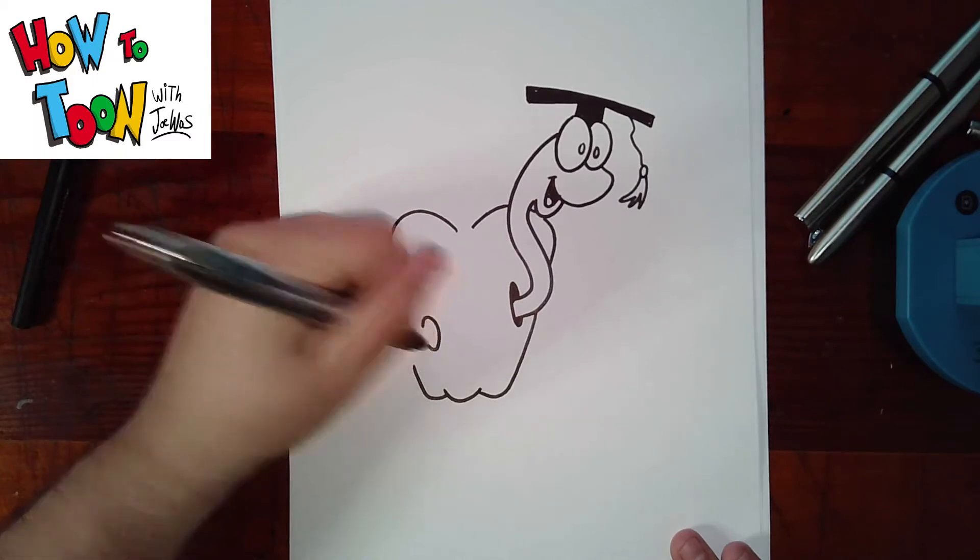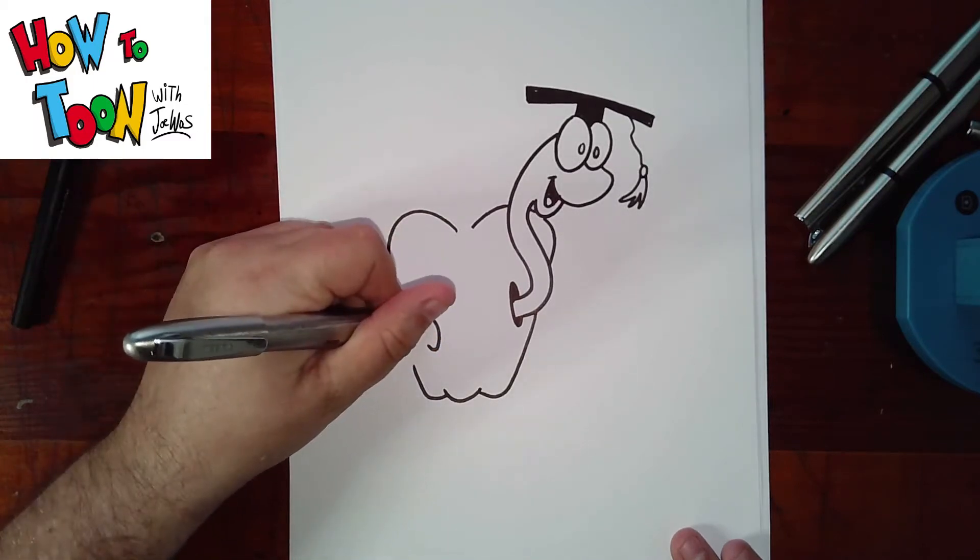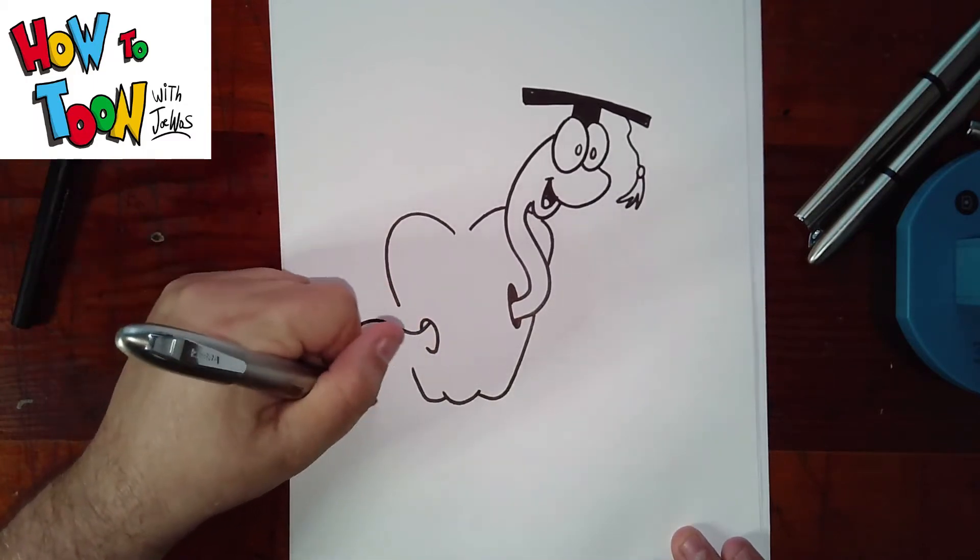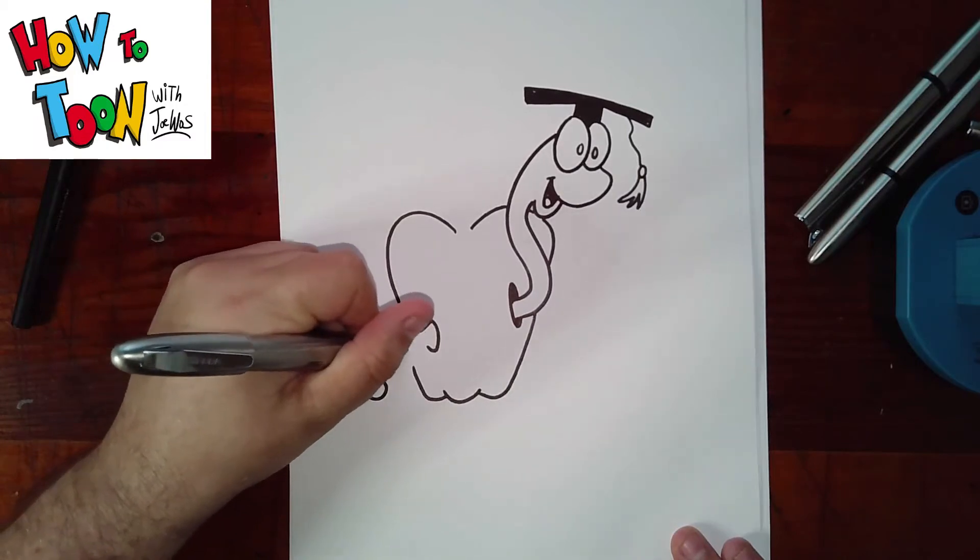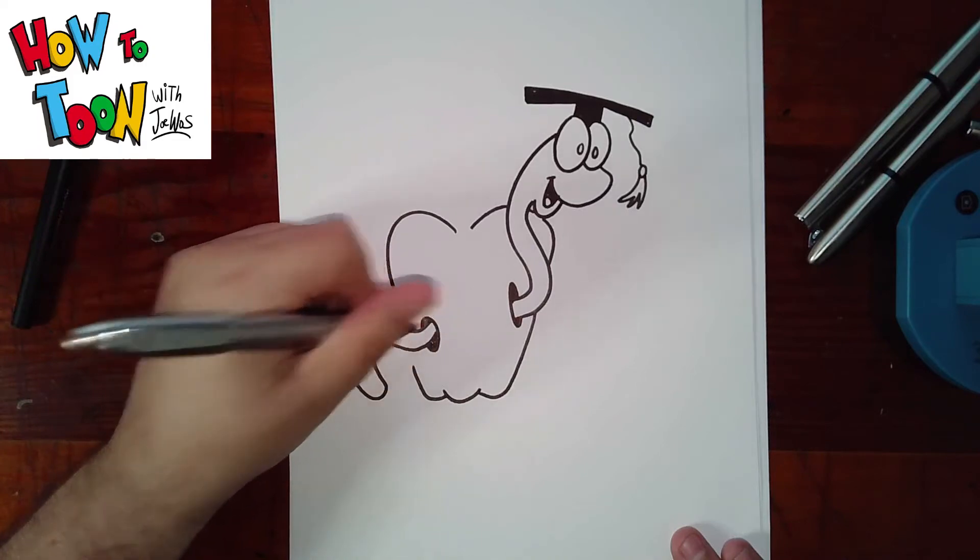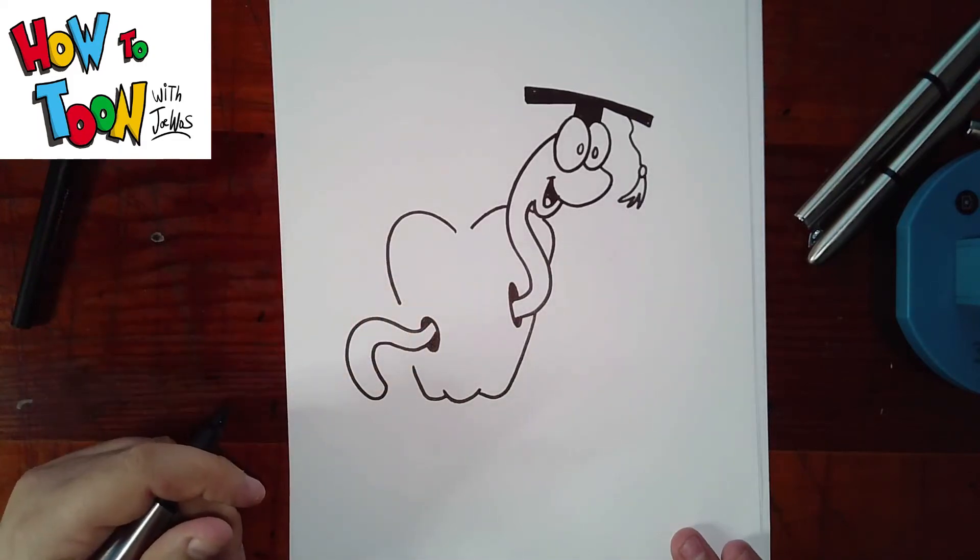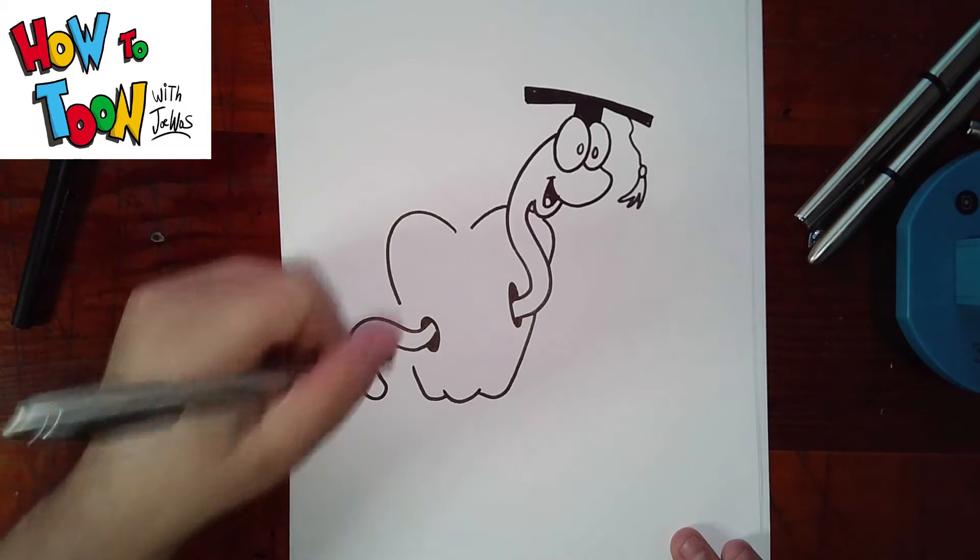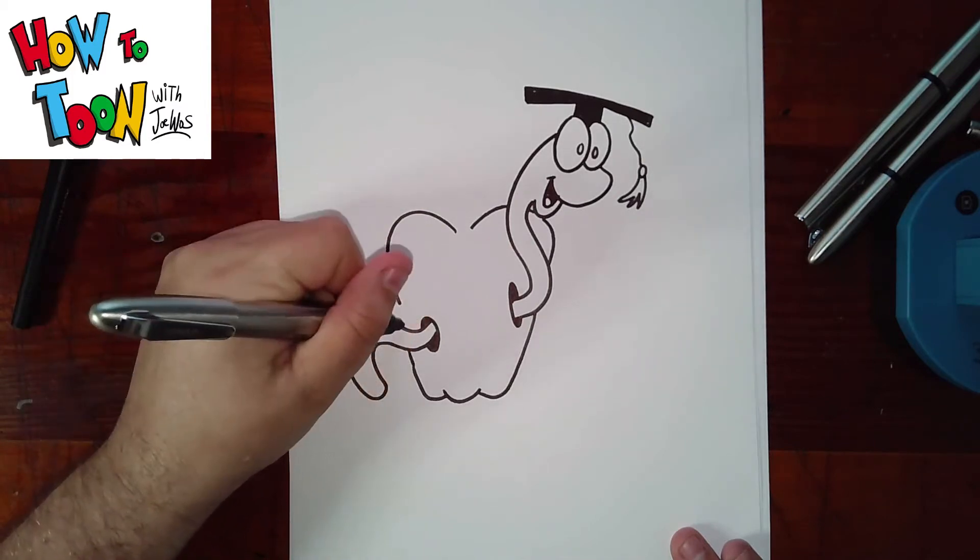So backwards C, and then here's the other part of that worm sticking out. And then I shade in below, and I shade in above. Now I can sort of connect this up.